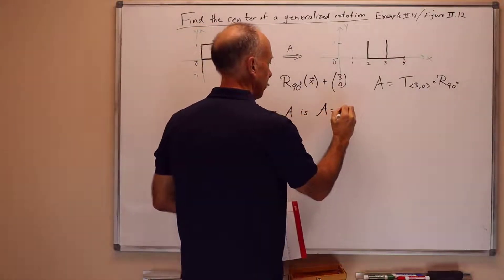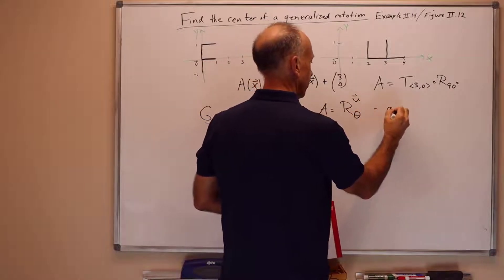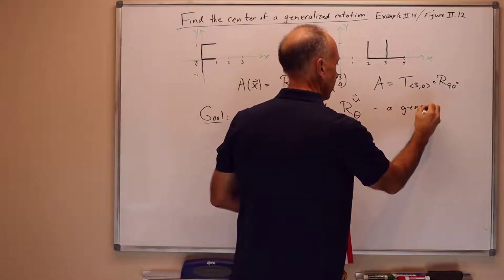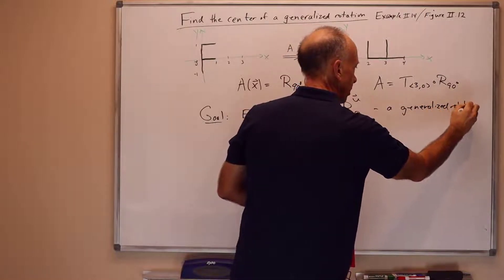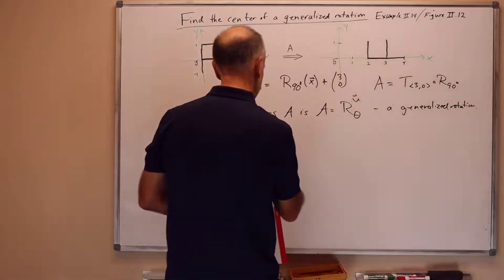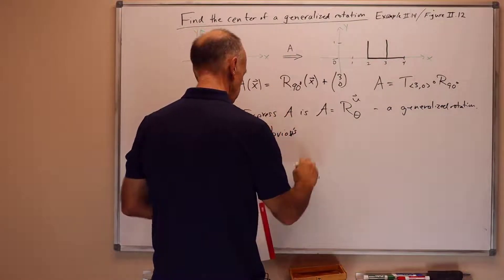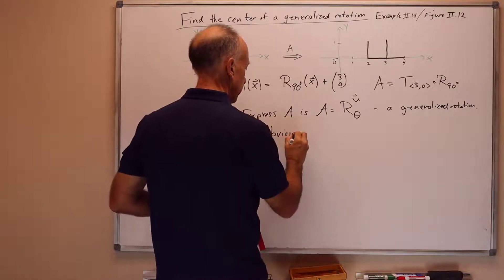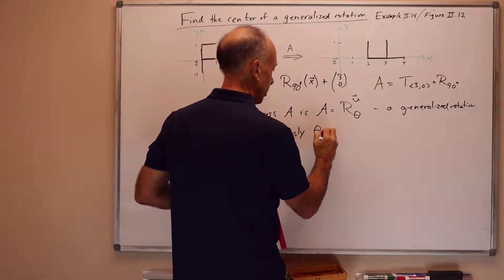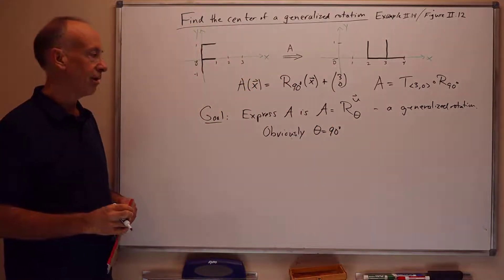So A should be the form R u theta, a generalized rotation around some point u. Now it should be obvious that theta is 90 degrees because the net rotation on the figure is 90 degrees in the counter-clockwise direction.